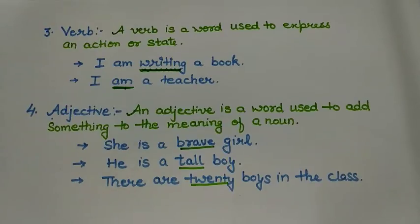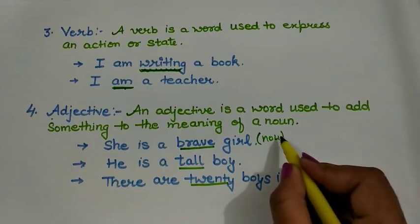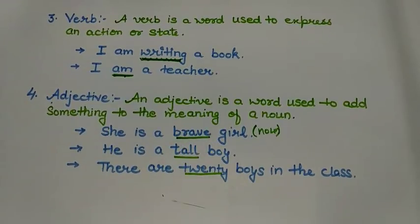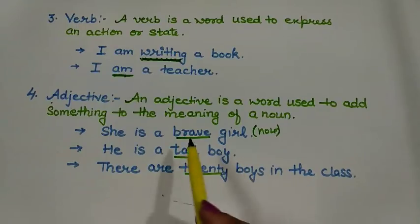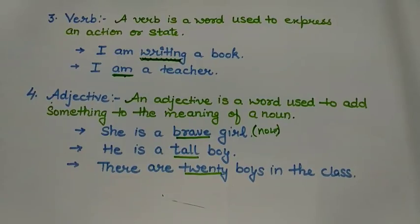The next part of speech is adjective. An adjective is a word used to add something to the meaning of a noun. We can also use adjectives to show the characteristic and quality of something. For example, 'She is a brave girl' — 'brave' is the adjective used for 'girl,' which is a noun. 'He is a tall boy' — 'tall' represents something about the noun, so 'tall' is an adjective. 'There are 20 boys in the class' — '20' is underlined because it shows number and acts as an adjective.